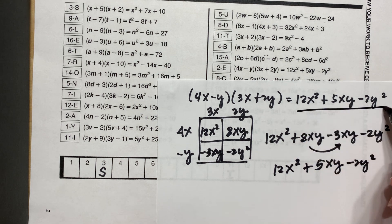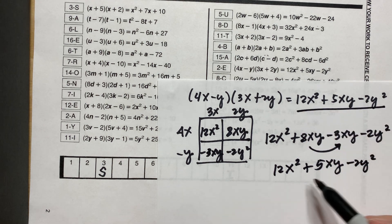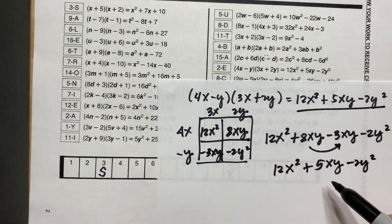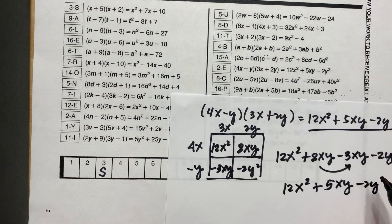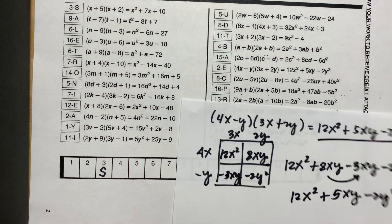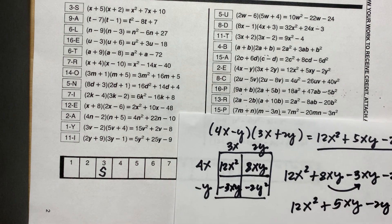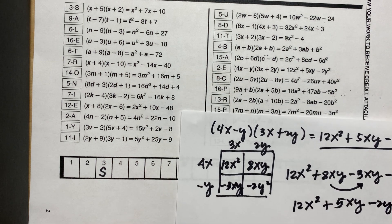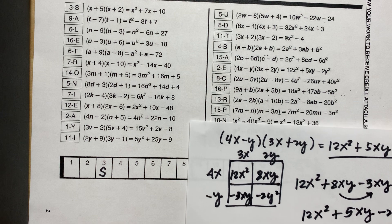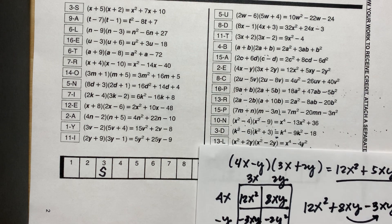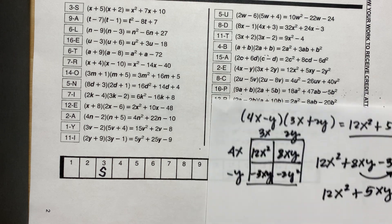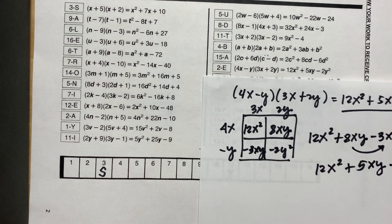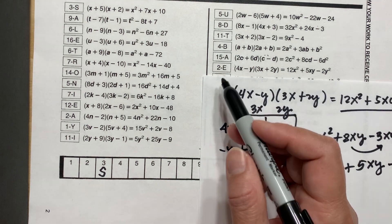So we have 12x squared plus 5xy minus 2y squared. It is true — we have the same answer. So we will write E in number 2.